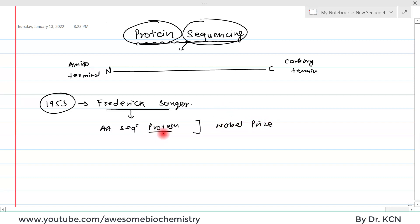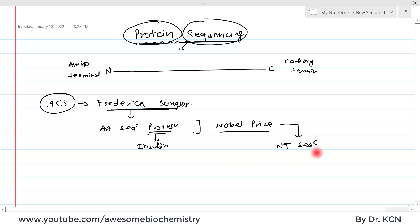Frederick Sanger first determined the sequence of insulin, which is a hormone that is chemically a protein. In his lifetime, he received two Nobel Prizes: one for determining the amino acid sequence of protein, and a second for determining the method of nucleotide sequencing. It seems Sanger was so fascinated about sequencing monomeric units that he earned two Nobel Prizes.